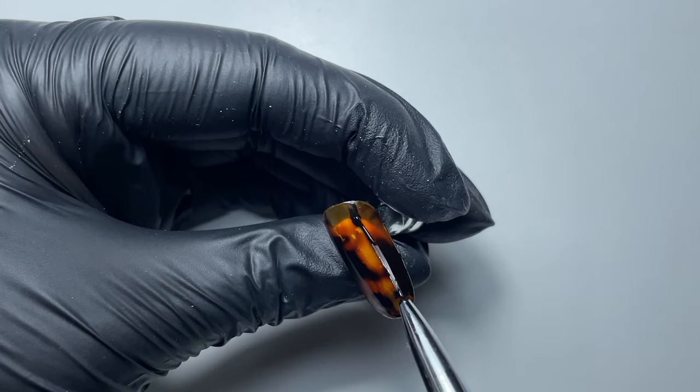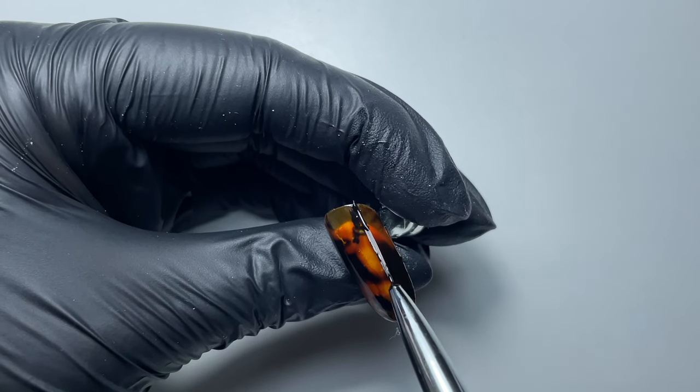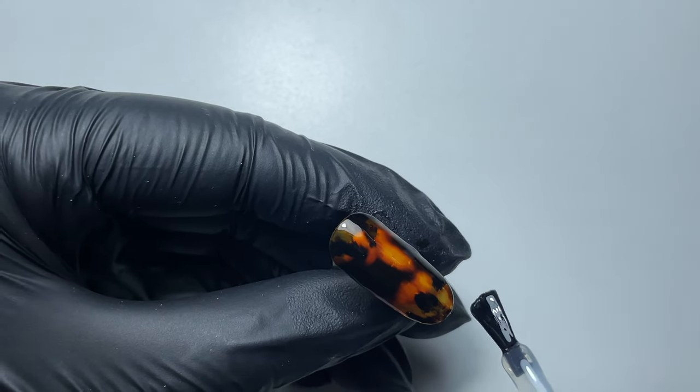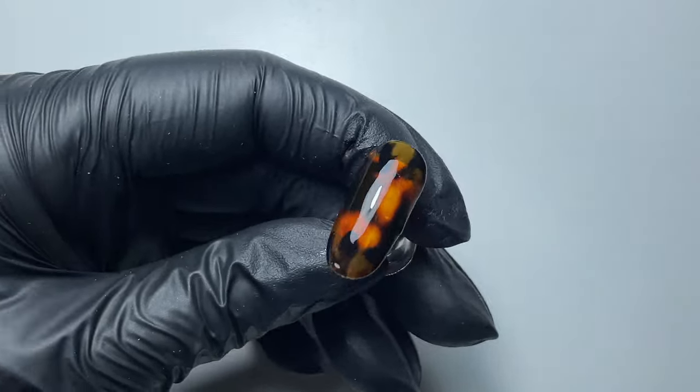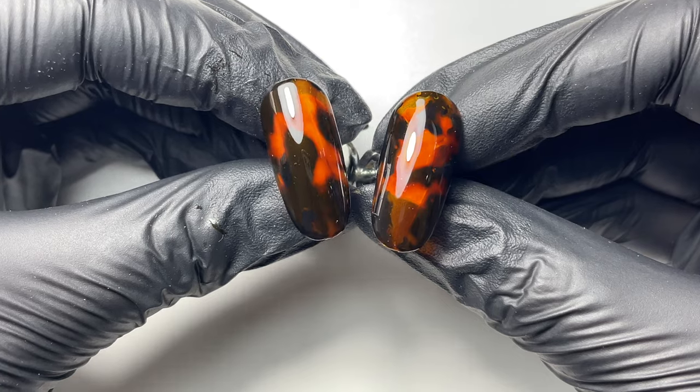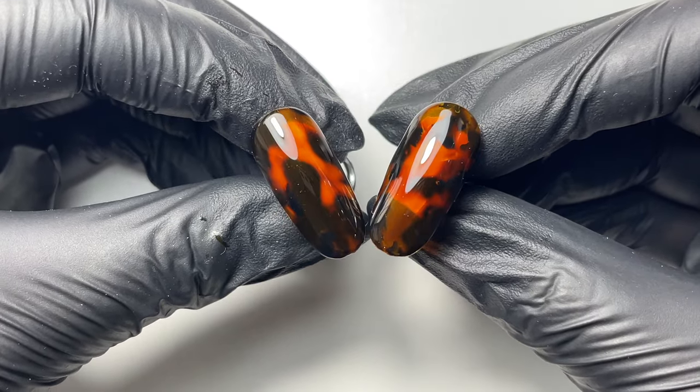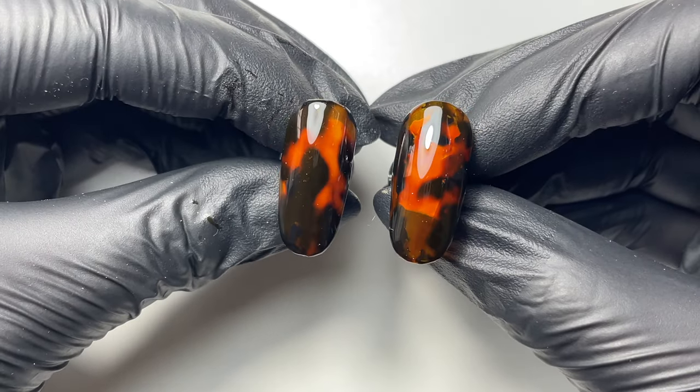Once you've finished adding your detail paint, you can cure, top coat, and cure again. And this is what you're left with. So on the left hand side we've got the seamless method and on the right hand side we've got the dabbing method.